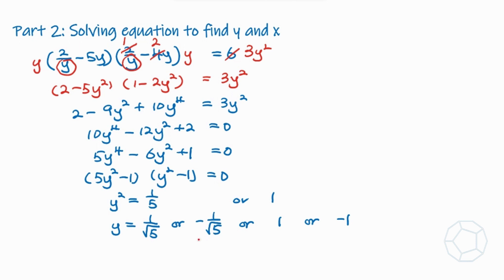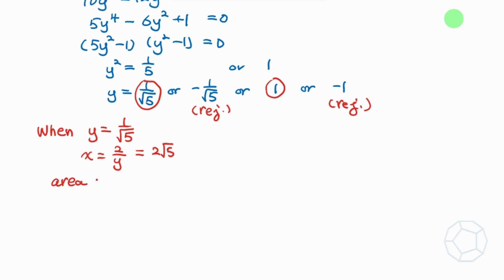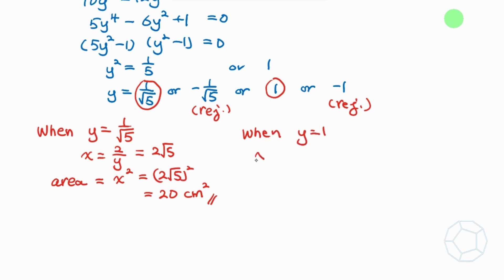Since y is related to side lengths, the two negative values are rejected, leaving y = 1/√5 or y = 1. When y = 1/√5, x = 2/y = 2√5, so the area of the square is x² = (2√5)² = 20 cm². For y = 1, x = 2/1 = 2, giving area = x² = 4 cm².